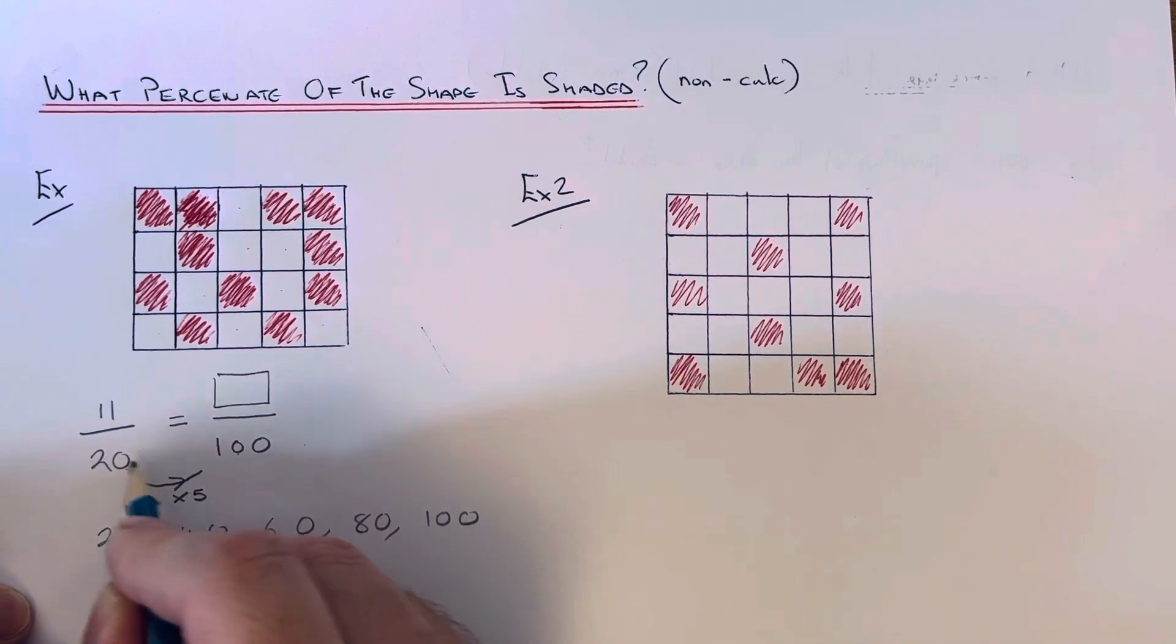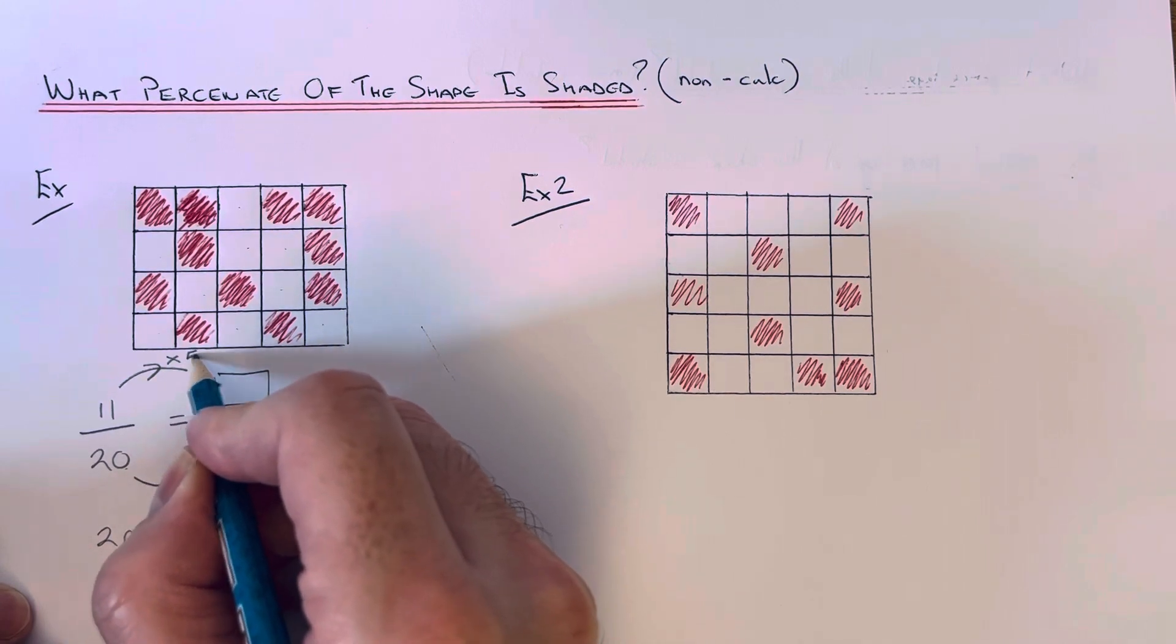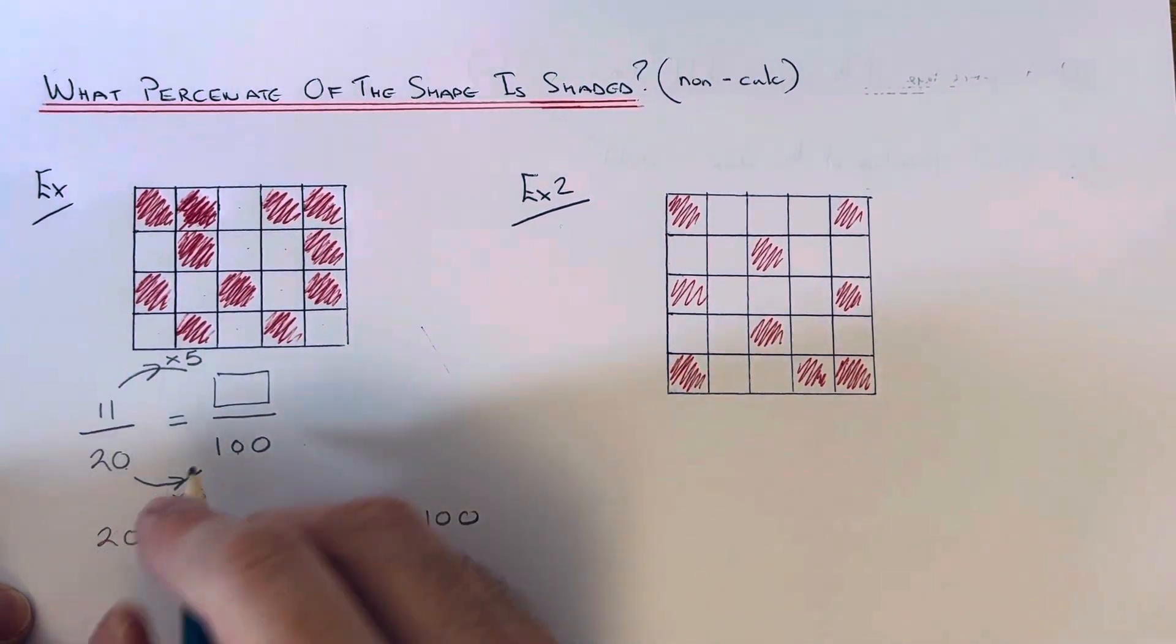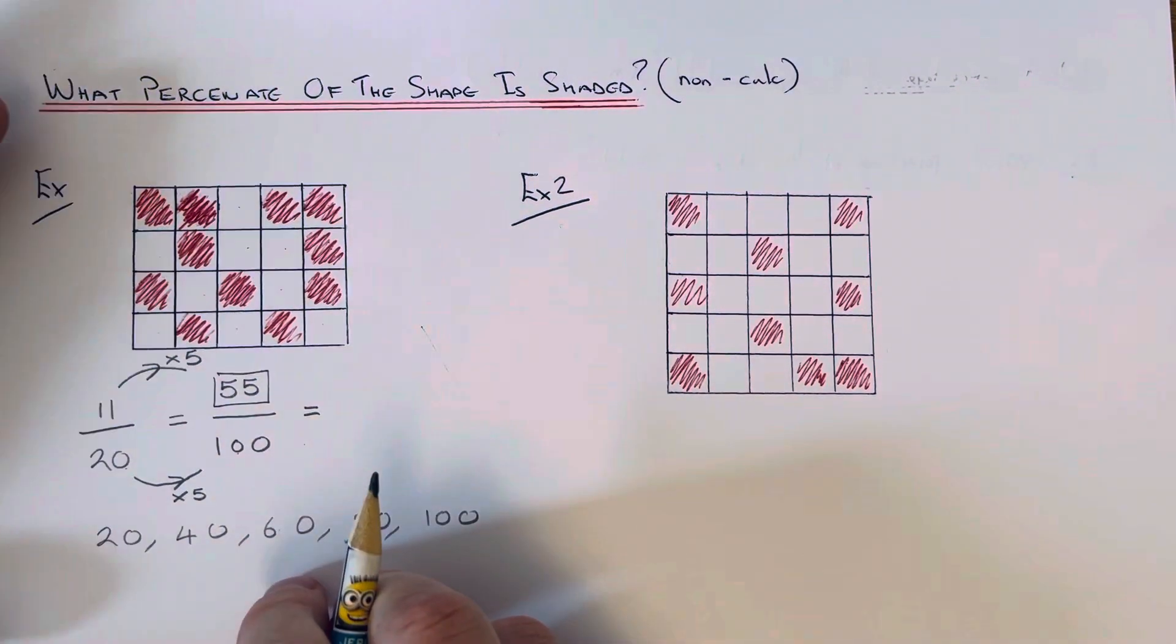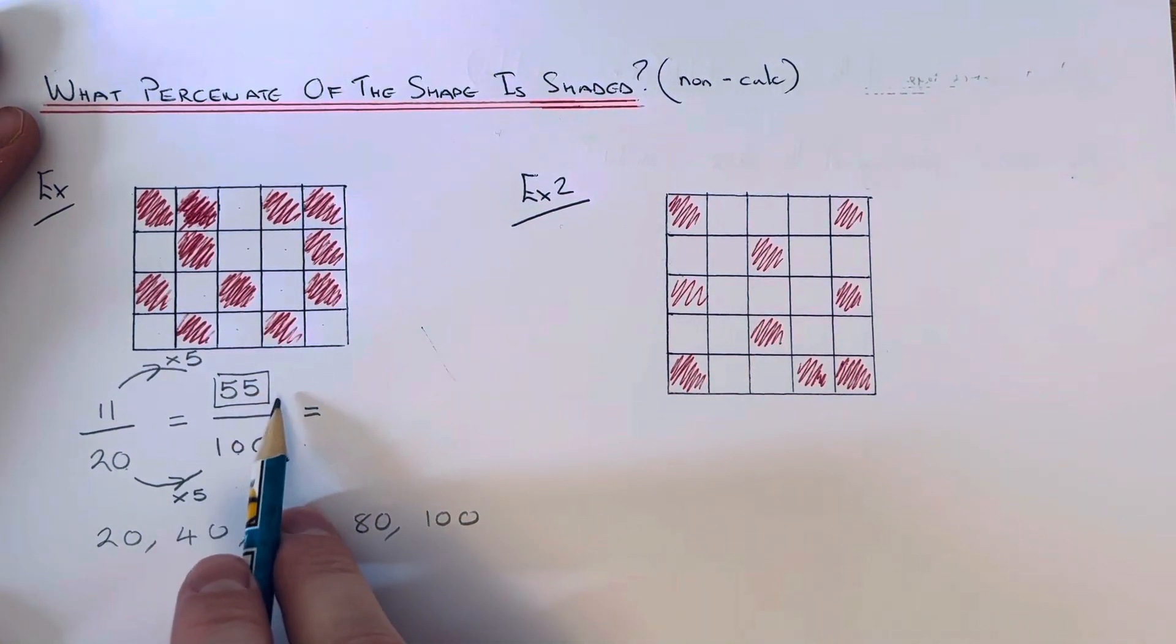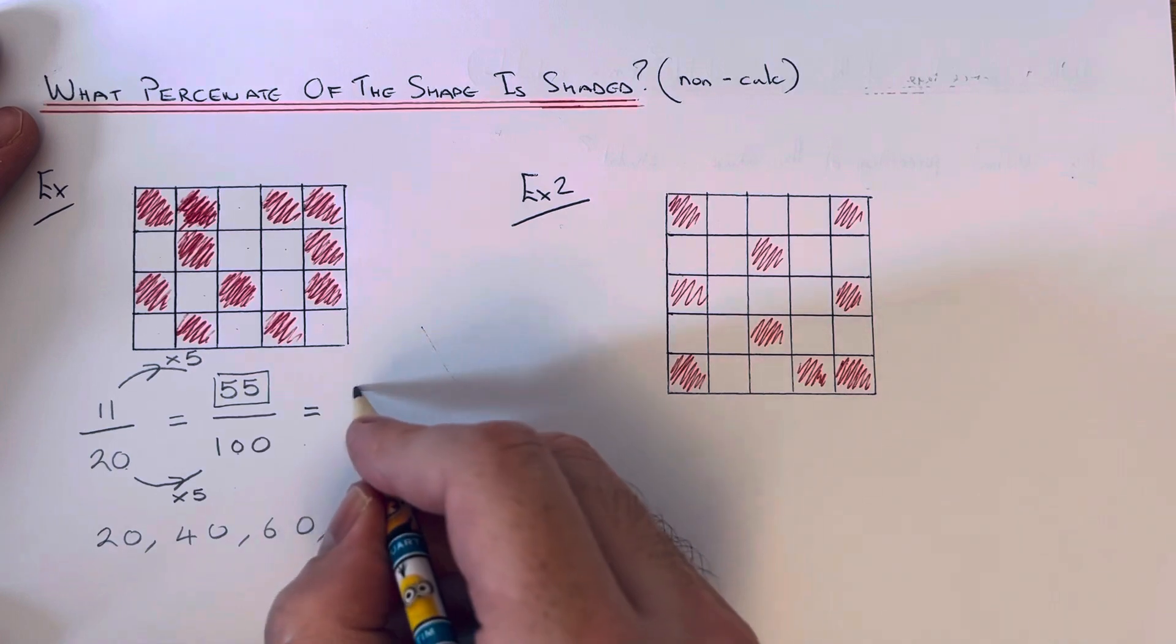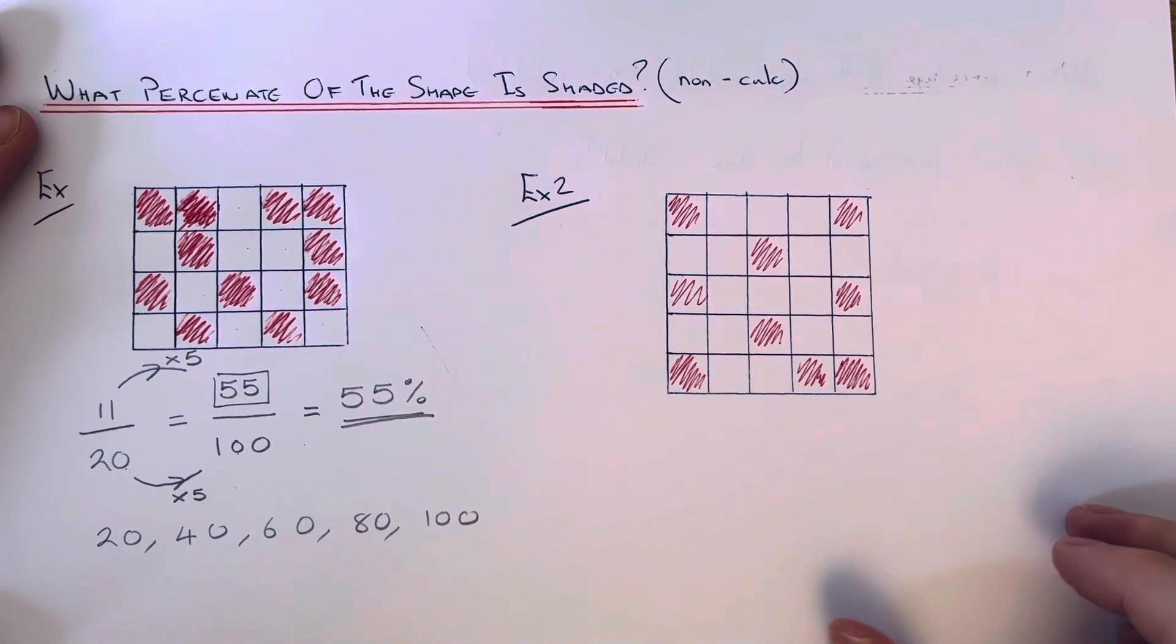So 20 times 5 is 100. So we need to multiply the top number by 5 as well. So 11 times 5 is 55. So then our percentage will be just the numerator, which is 55. So 55% of the shape is shaded.